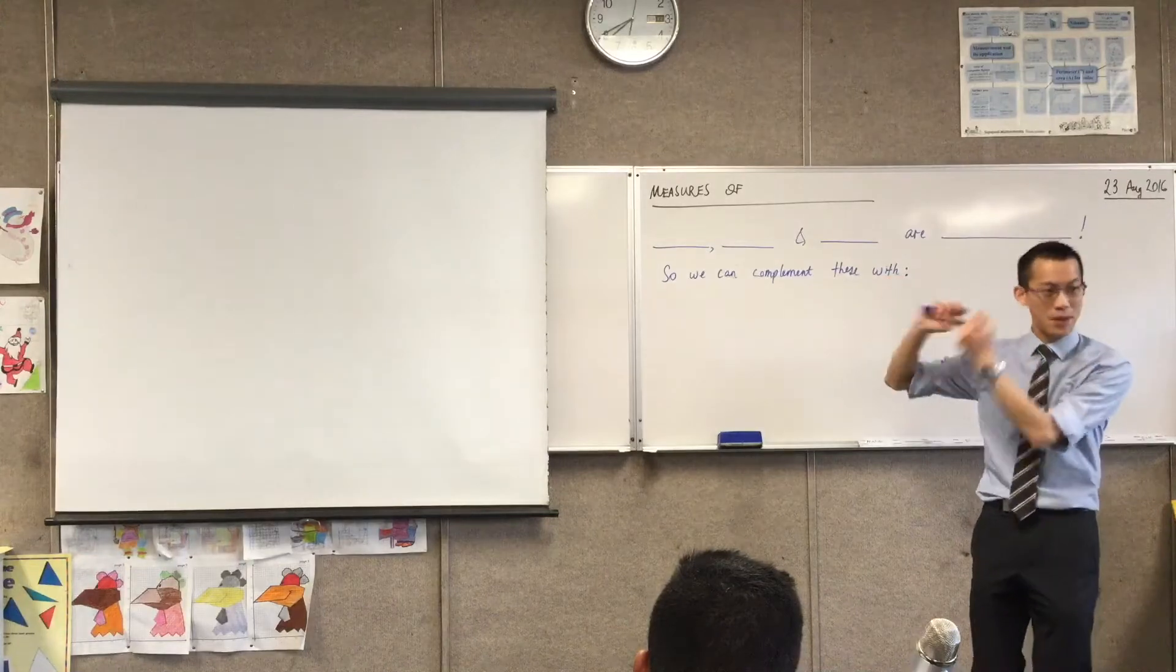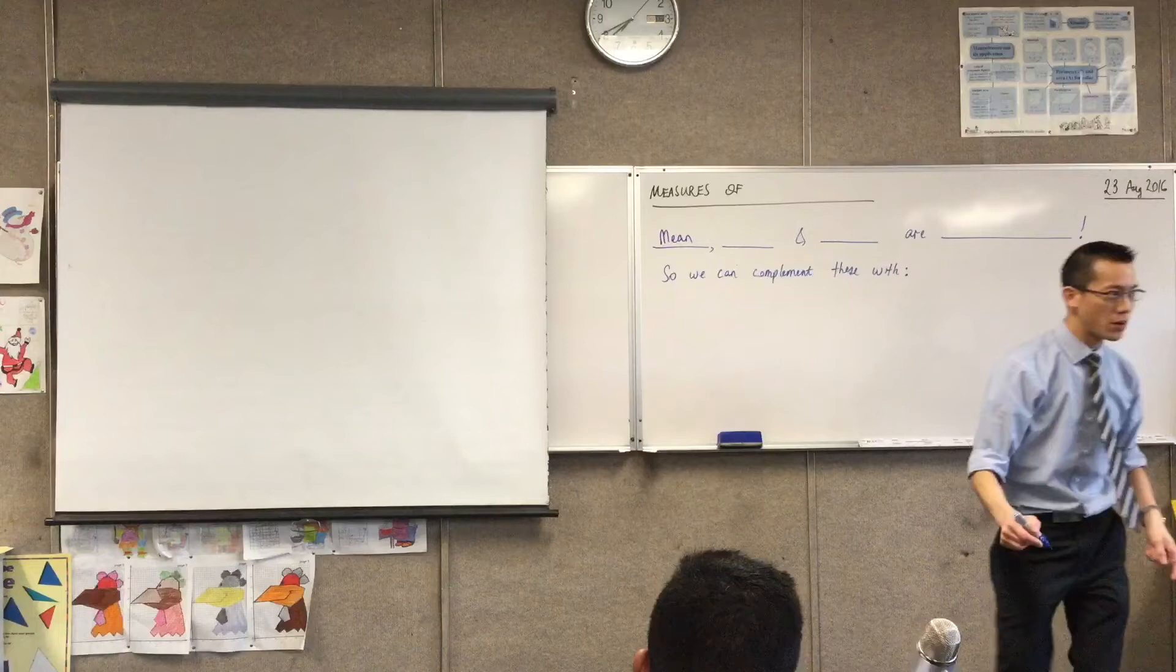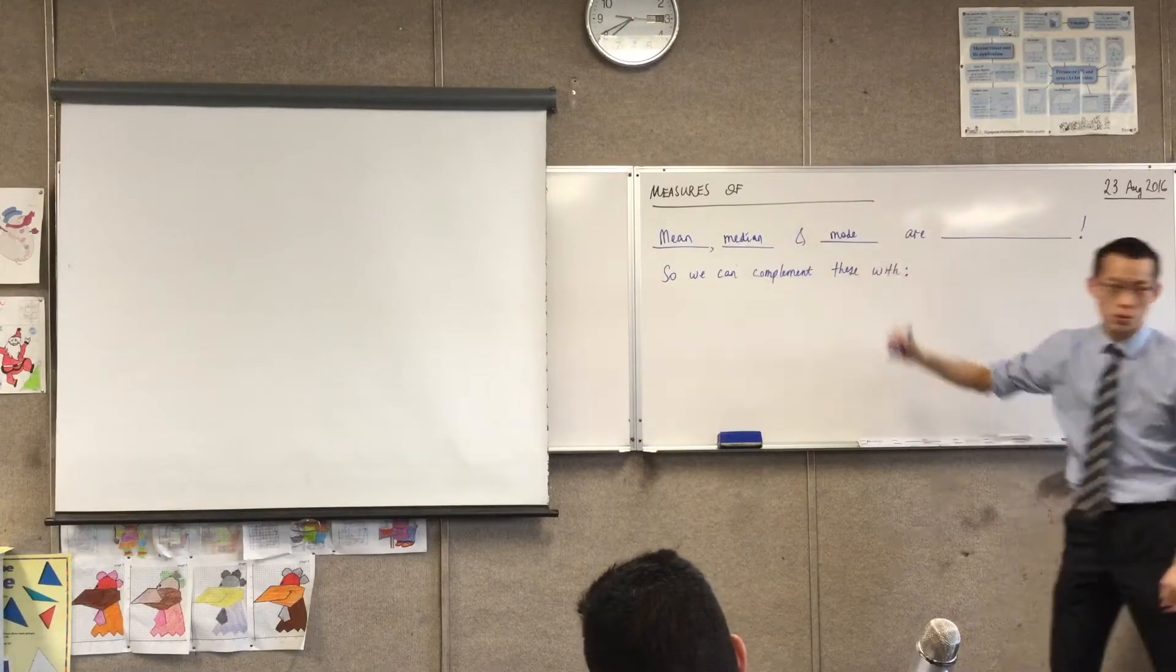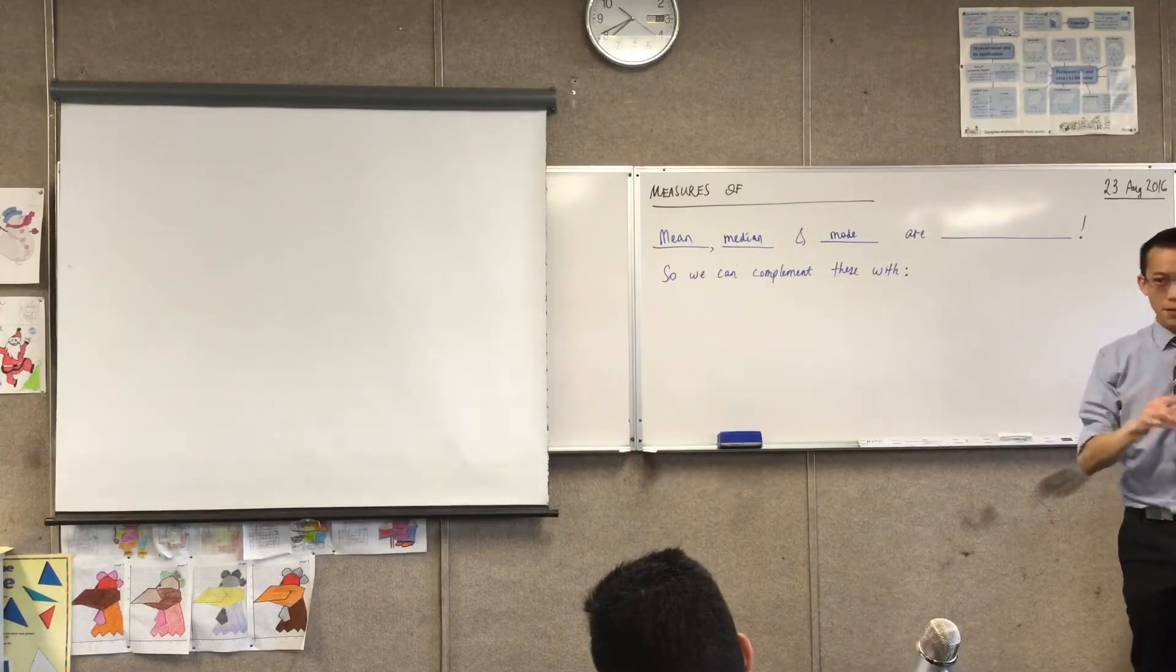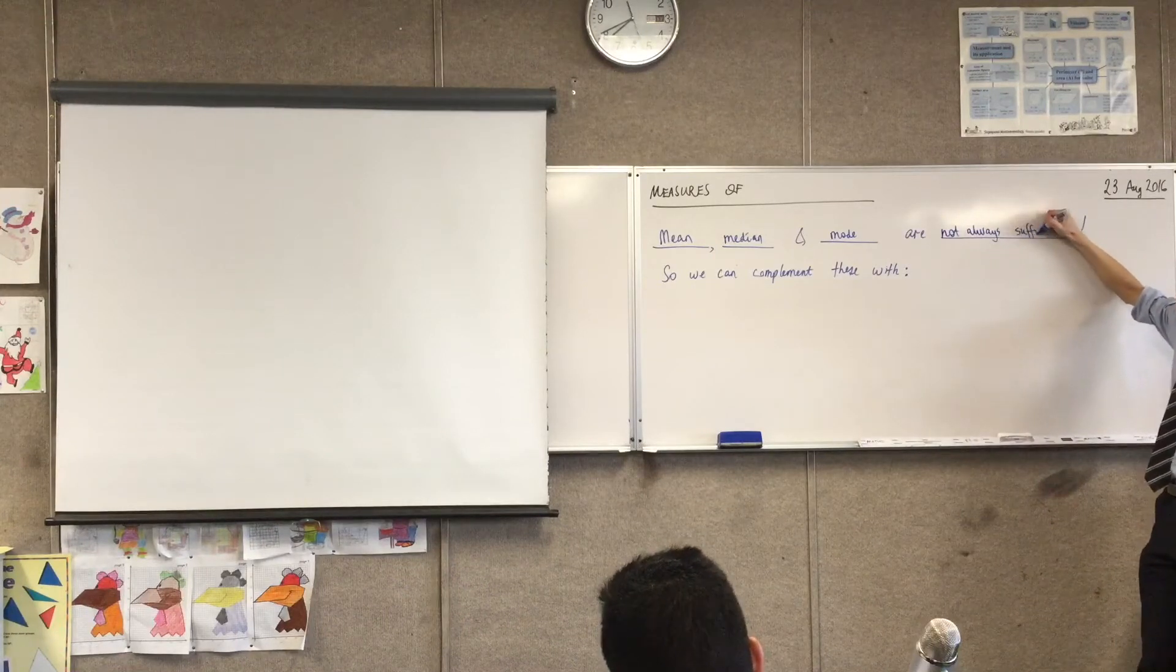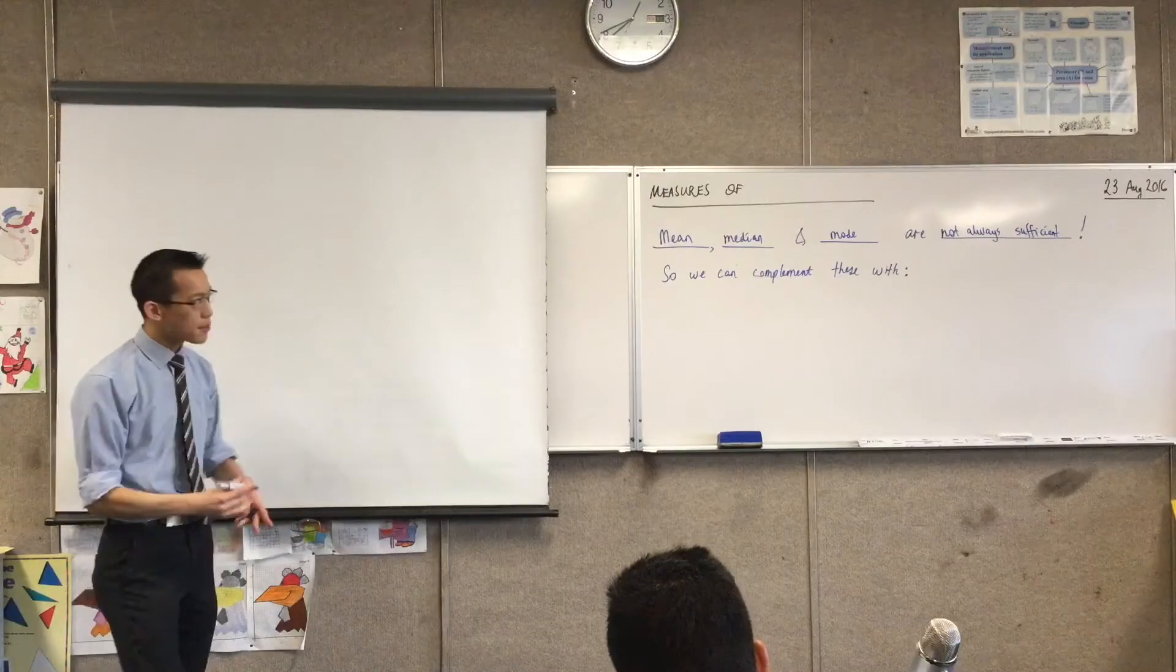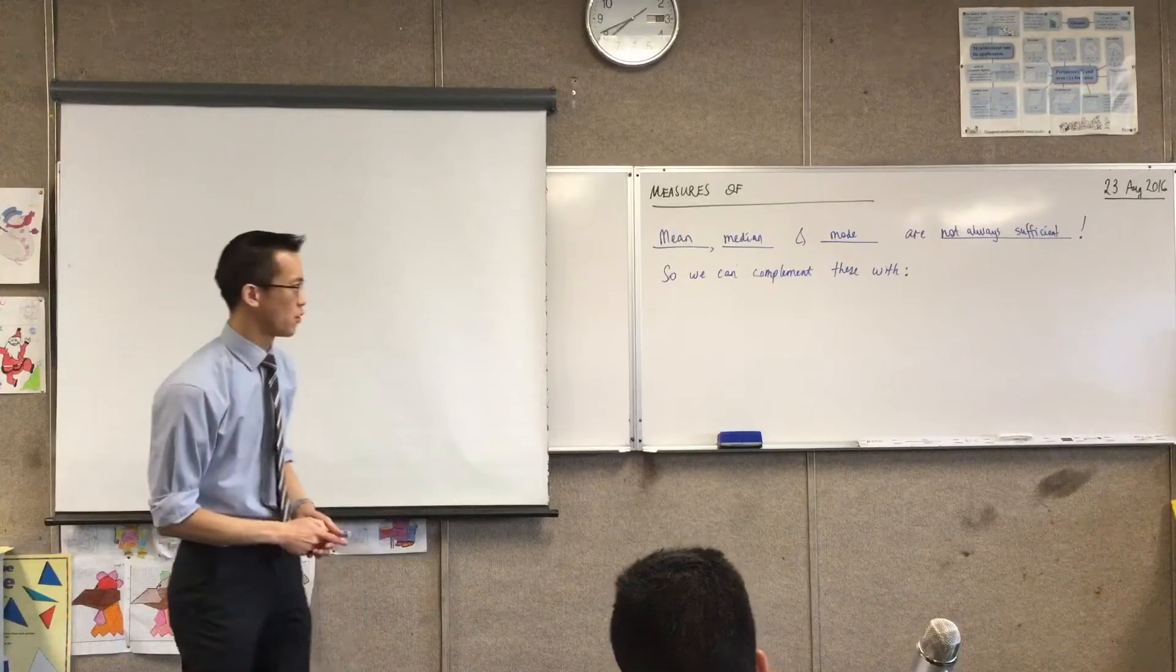Mean was the first measure of central tendency that we looked at. Mean. But we have two others, right? What are they? Median and mode. Very good. So, this is like the center of our data, the middle of our data, and then you've got the most common score, right? So, mean, median and mode, they're good, but they are not always sufficient to try and give you a sense of what is this group of people like? What is this set of scores like? What's this population? Can you give me an idea of its characteristics? The mean, the mode, the median, they'll give you some information, but they don't always tell the whole story, okay?